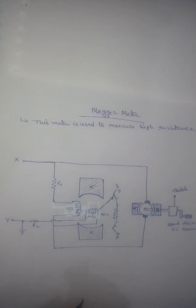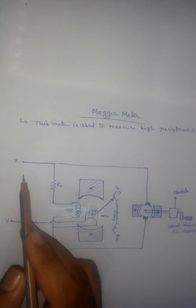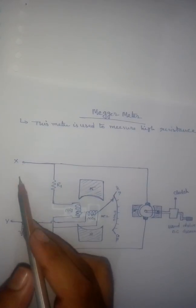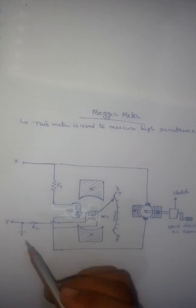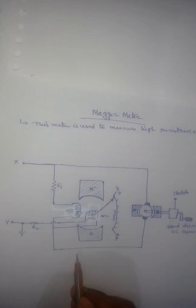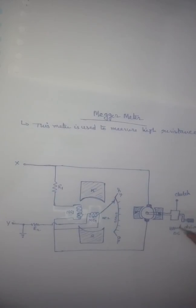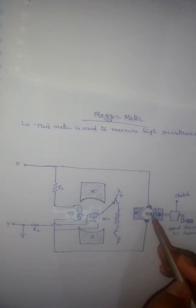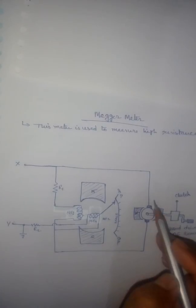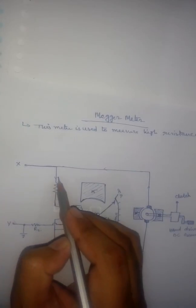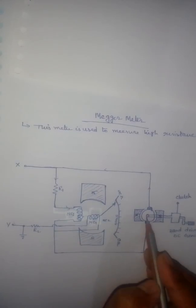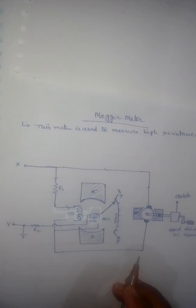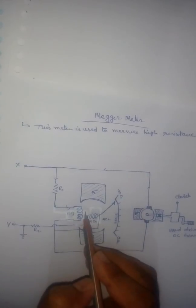Now we will see the working of the Megger. First, suppose no object, no insulator, and no test element is connected — that means the X-Y terminals are open. When we drive the hand-driven DC generator, it will generate some DC voltage and current, and that current will flow only through MC1, the moving coil 1.